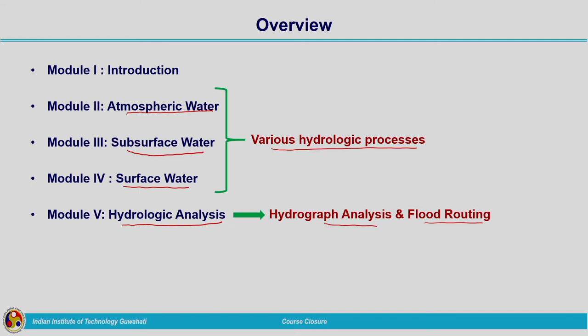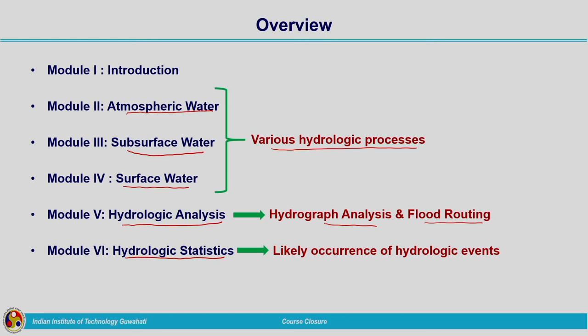After completing hydrologic analysis, we moved on to module 6 on hydrologic statistics. Under this module we covered the preliminary concepts related to probability and statistics for the determination of the probability and magnitude of certain events such as storms or floods which may occur within a certain lifespan of a particular structure. Different distributions, their properties and parameters were discussed in a basic way, enabling you to determine the likely occurrence of a particular hydrologic event.